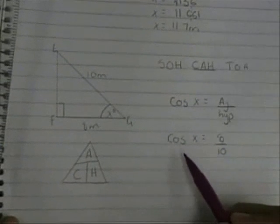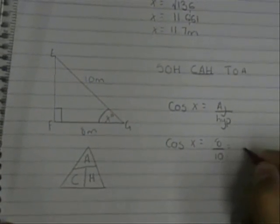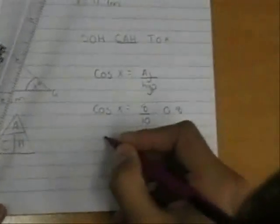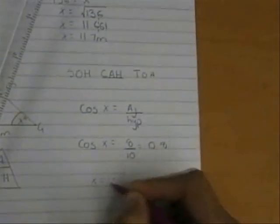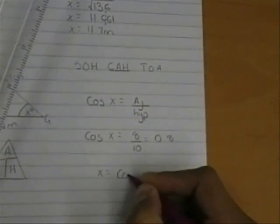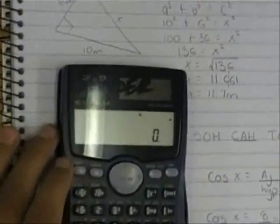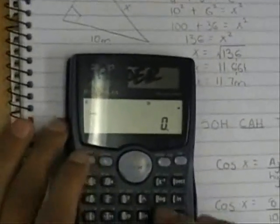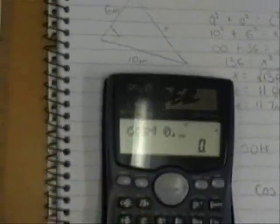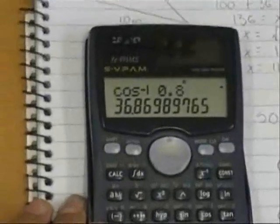The cosine of 8 over 10 which equals 0.8. So x equals inverse cosine 0.8. So shift and cosine would give me inverse cosine. Inverse cosine equals 36.86.